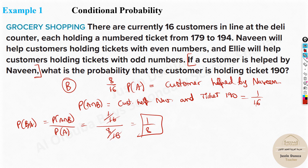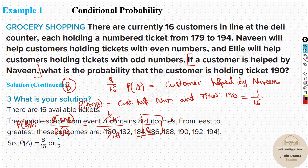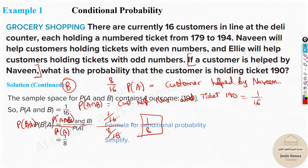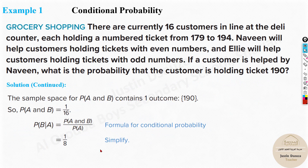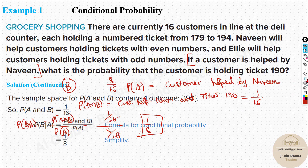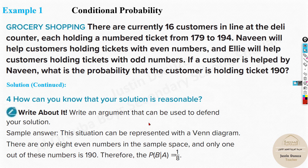Understanding and writing the probability formula is easy, but identifying the conditions correctly is very crucial. The answer is 1/8 probability. You can see that P(A) = 8/16 = 1/2, and when you apply the formula with the intersection, the final answer is 1/8. Yes — one by eight. That's how we solve it.